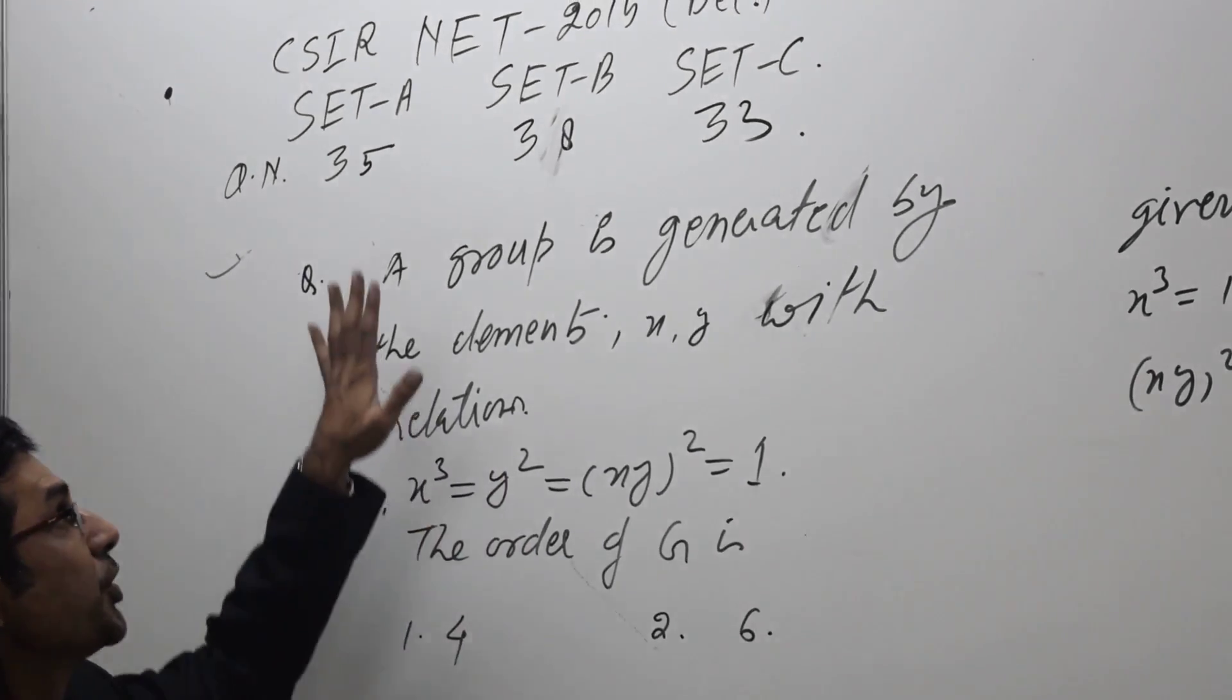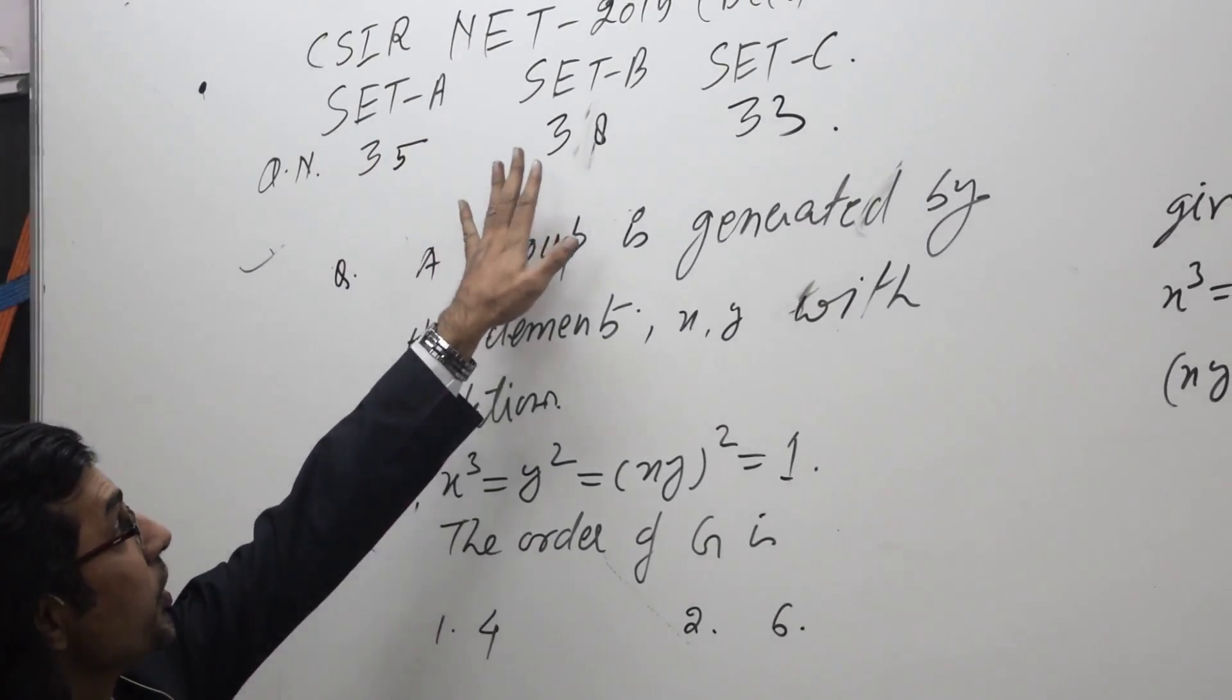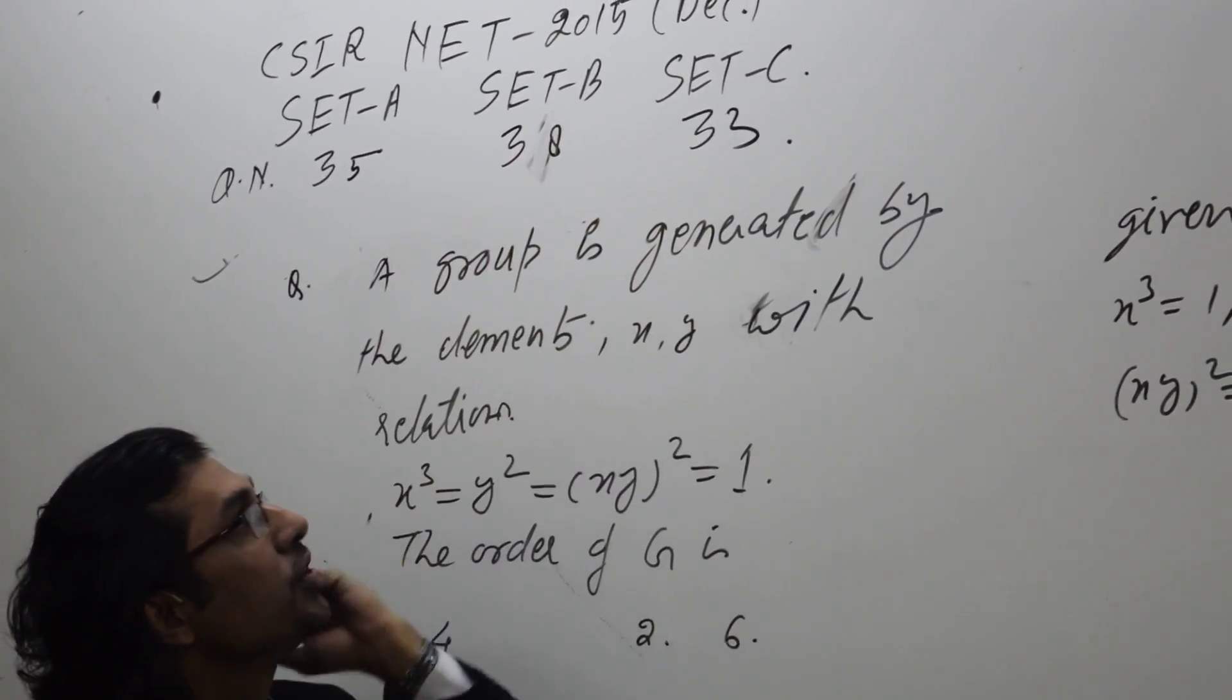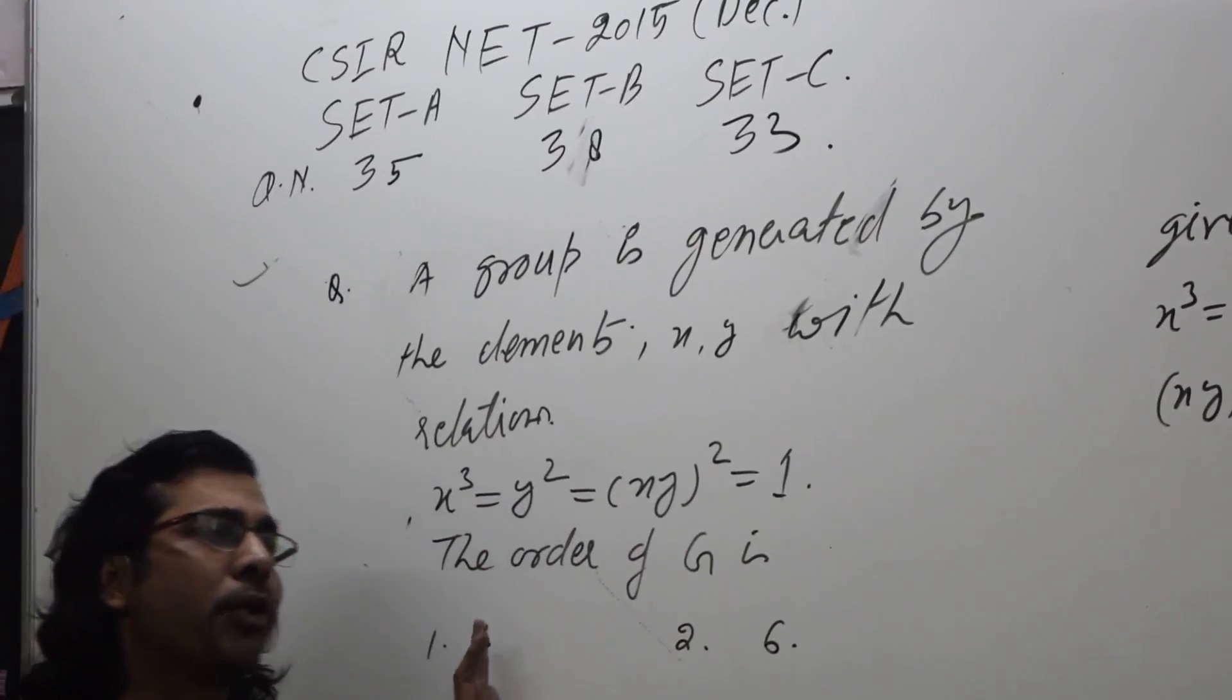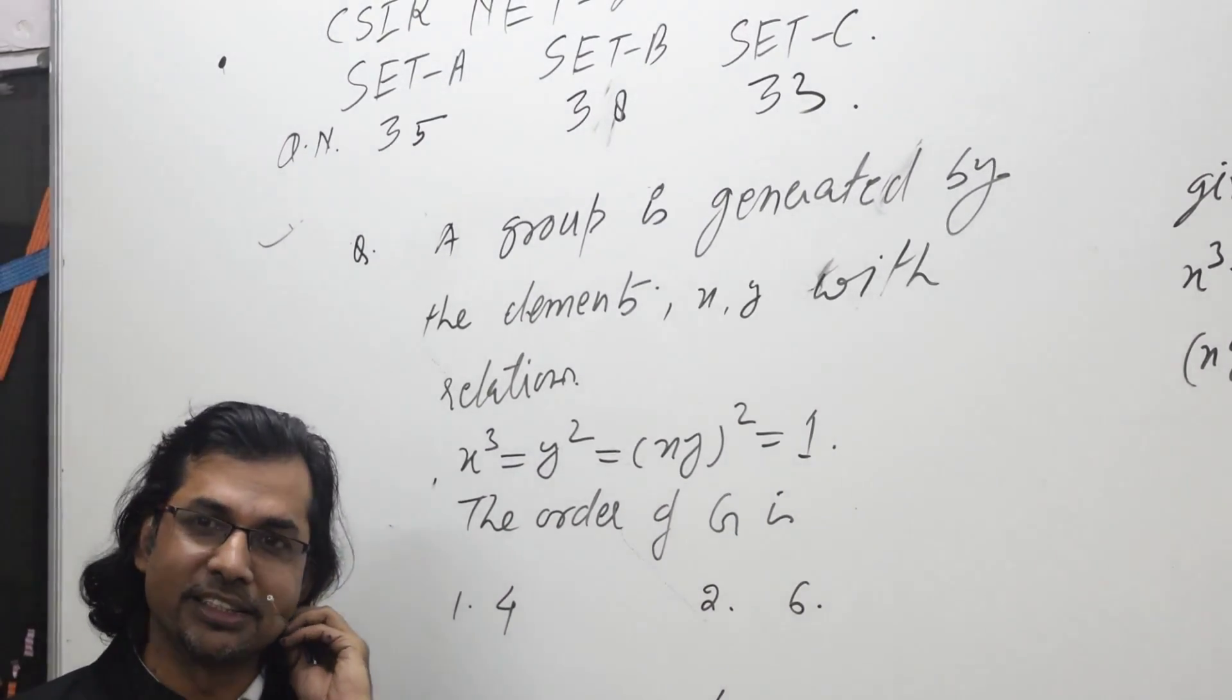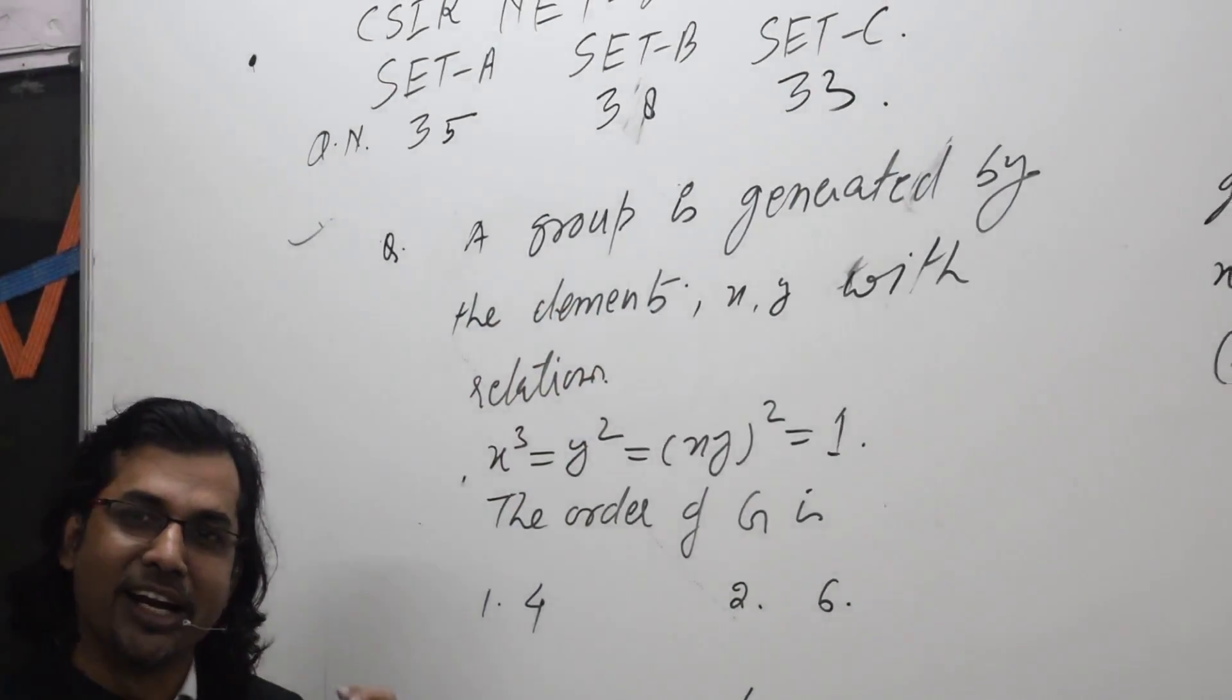So in the continuation, here is the next question. Question number 35 of set A, question number 38 of set B, and question number 33 of set C. This is again a very popular question of any exam where modern algebra is asked. A question based on group theory which involves generators and relations.